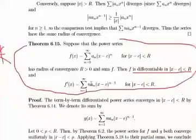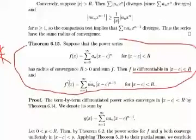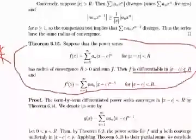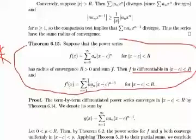So if you apply this theorem again — when you differentiate this power series, you have a power series for f prime. So from this theorem, f prime is differentiable in this interval. When you differentiate this power series again, you get another power series. That power series converges to f double prime in the same interval with the same radius.